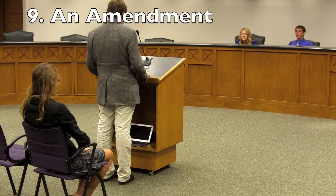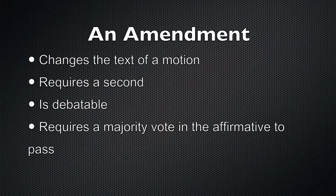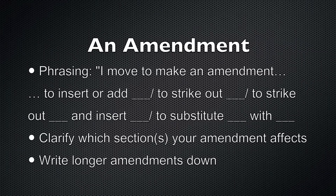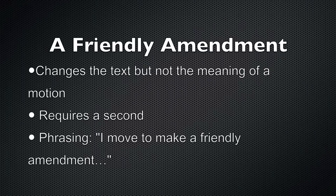An amendment changes the text of a motion. Like most motions, it requires a second, is debatable, and requires a majority vote in the affirmative to pass. The phrasing used is: "I move to make an amendment," and then you use either: to insert, to add, to strike out, to strike out and insert, or to substitute with. Make sure to clarify what section the changes are affecting, and if it is a longer amendment, have it written down first. Additionally, if your amendment doesn't change the meaning of a motion — for example, by adding correct punctuation — it is classified as a friendly amendment. The phrasing is "I move to make a friendly amendment," and in this case only a second is required to pass the motion. In every other way, it functions just like a regular amendment.